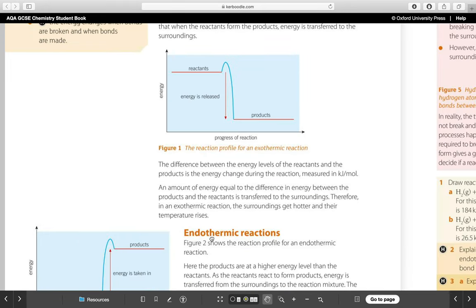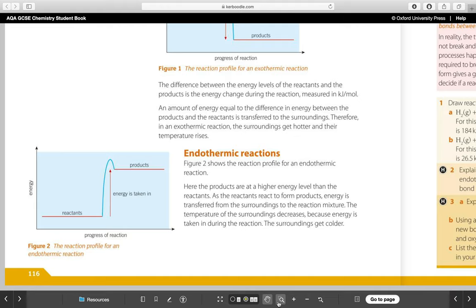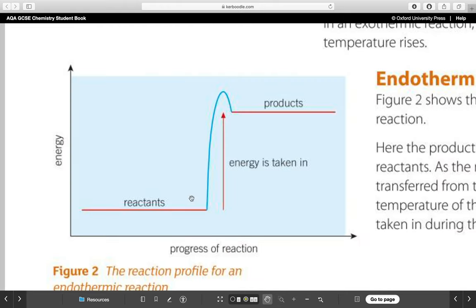Now, in the other type of reaction, which is the endothermic reaction, you can see down here, what we have here is the opposite. Our products have higher energy than the reactants we started with. To get to that higher level, we need to put energy in, and that energy comes from the surroundings. And as we take energy away from the surroundings, the surroundings get colder.